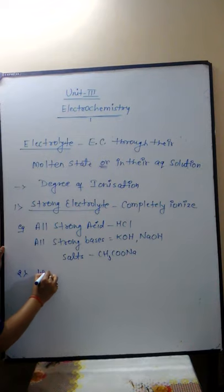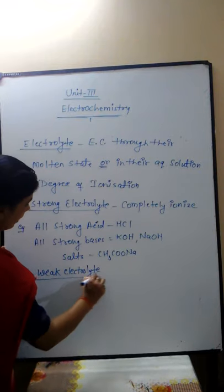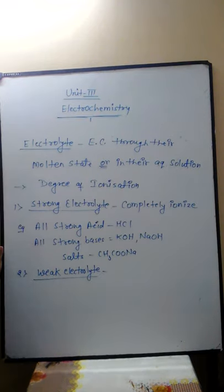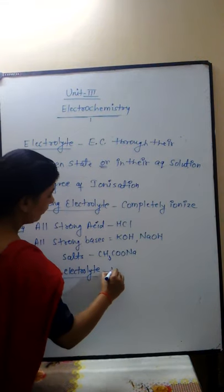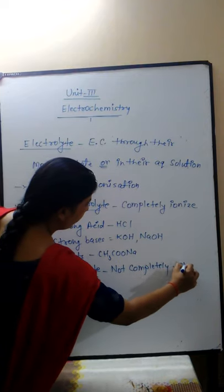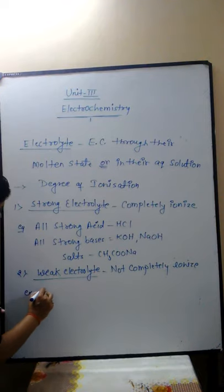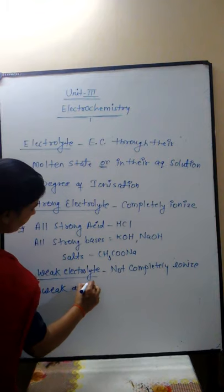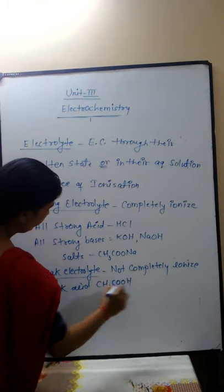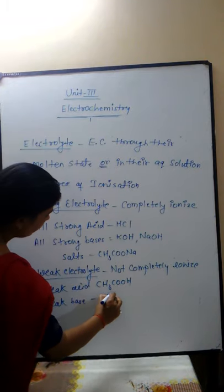Second is called weak electrolyte. Weak electrolytes are those substances which are not completely ionized — they are only very partially ionized in their aqueous solution. Their ionic conductance value is very very less. Examples include weak acids and weak bases such as NH4OH.